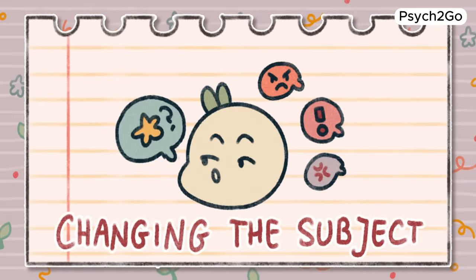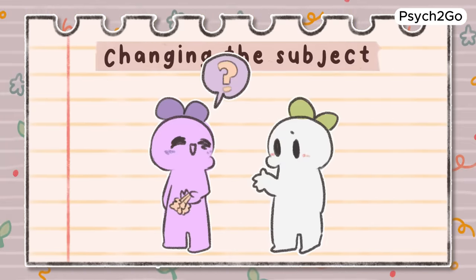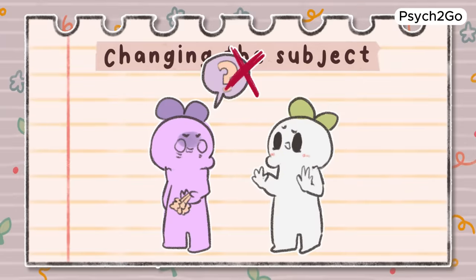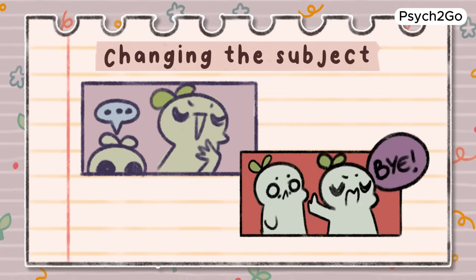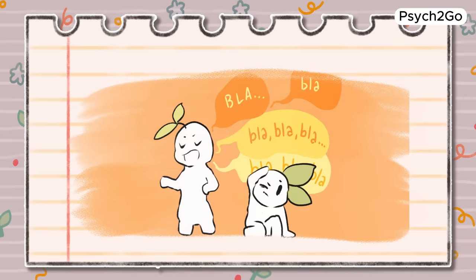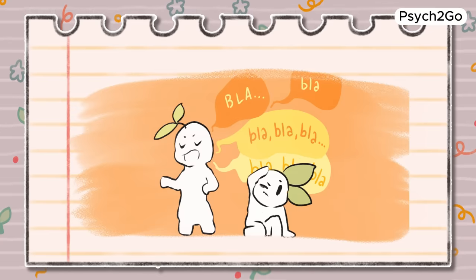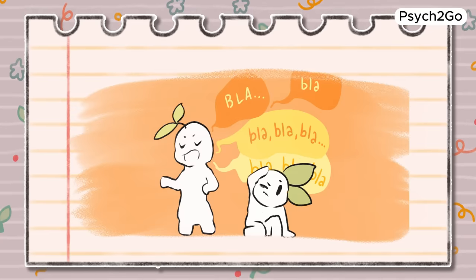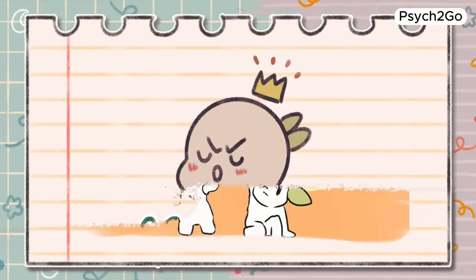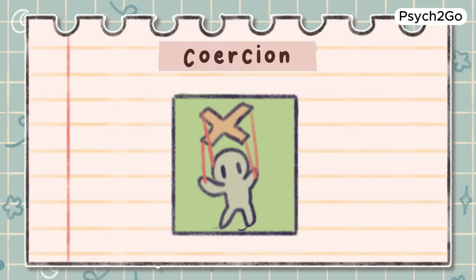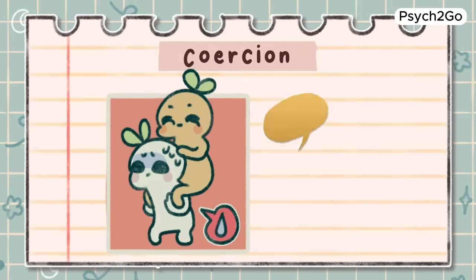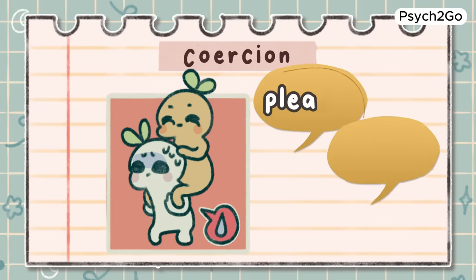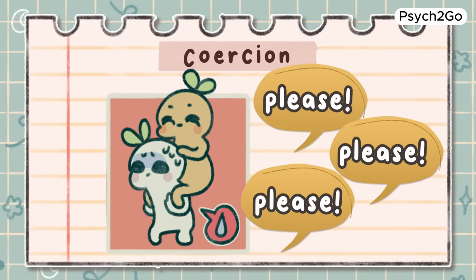Changing the subject. When a manipulator is caught in a lie or is embarrassed about being wrong, they will change the subject to distance themselves from their behavior. Later on, they may try to gaslight you by changing what they said or explaining things in a way that is more favorable to them. Coercion covers tactics like blackmail, guilt tripping, and threatening — the general goal of trying to convince you to do something you don't want to do.